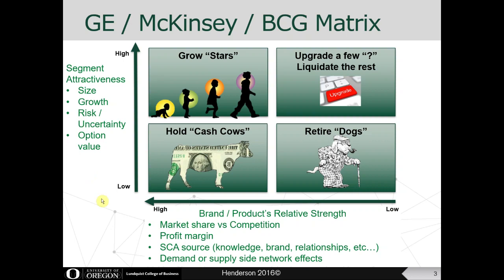On the y-axis, you plot the attractiveness of the market or customer segment you're targeting. You can look at size in terms of units, dollars, or influence; growth rate; risk and uncertainty; and asymmetric upside — option value. For example, if it's a very influential, trend-setting, or high-prestige segment, you might target it even at a loss because winning it unlocks other opportunities.